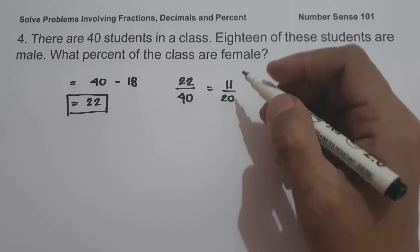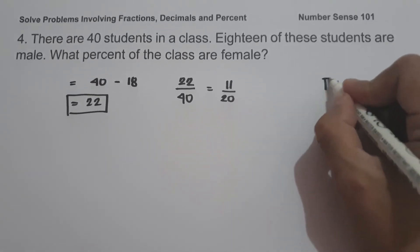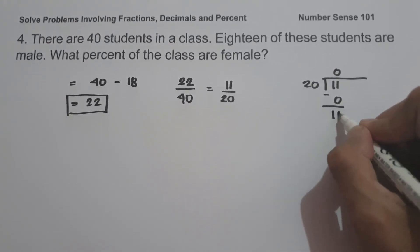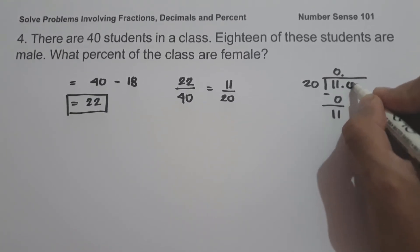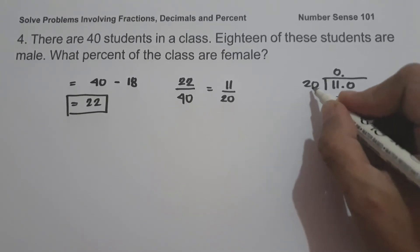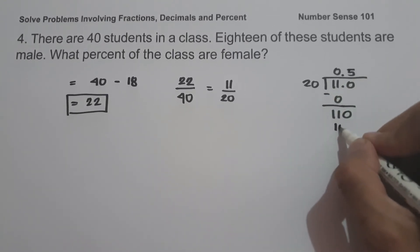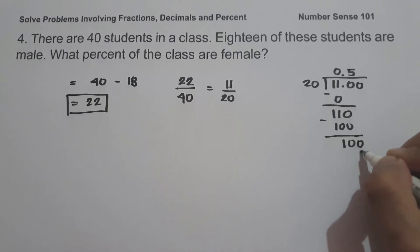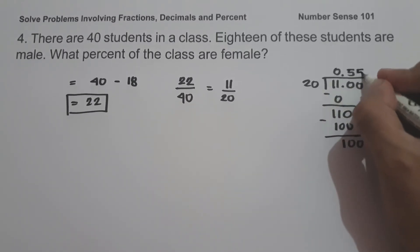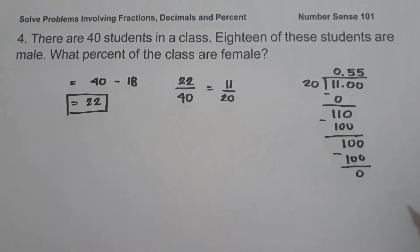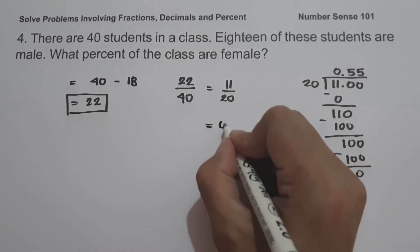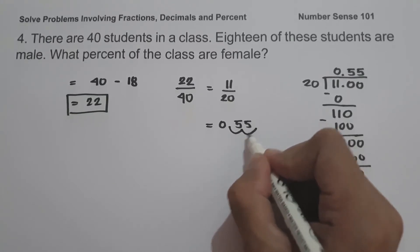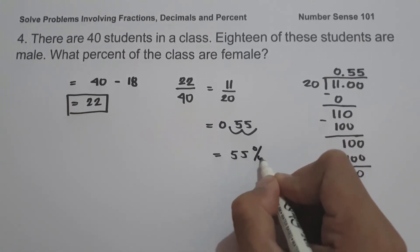To write 11 over 20 as a percentage, let us divide 11 by 20. Bringing down zeros: 110 divided by 20 is 5, and 5 times 20 is 100; 110 minus 100 is 10. Bringing down another zero: 100 divided by 20 is 5, and 5 times 20 is 100, remainder 0. So 11 over 20 in decimal is 0.55. Moving two decimal places to the right gives us 55%, and this will be our answer.